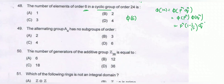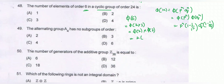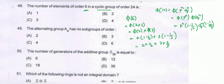So φ(6) equals φ(2) times φ(3). φ(2) equals 2 times (1 minus 1 upon 2), and φ(3) equals 3 times (1 minus 1 upon 3). This gives 2 times one-half times 3 times two-thirds, which equals 2. Option B is the correct option.